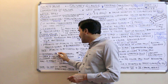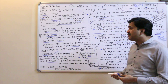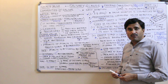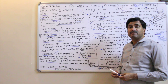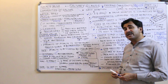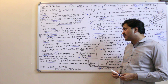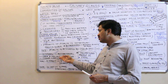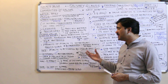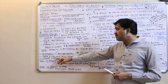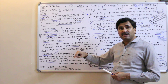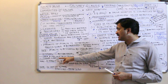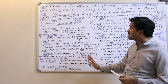One more point asked in AIIMS examinations: lactoferrin is found in saliva and it is antibacterial. Urea and uric acid are also found in saliva but in very small quantities. There is one more enzyme in our saliva which is inactive and non-functional — that is lingual lipase.